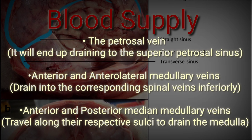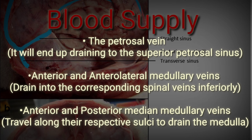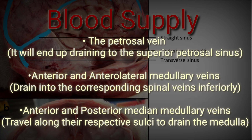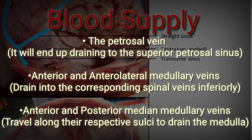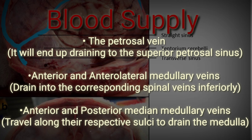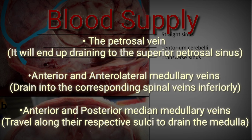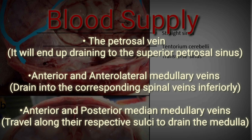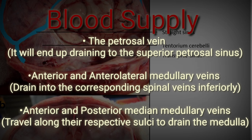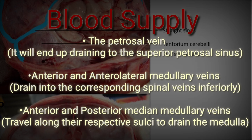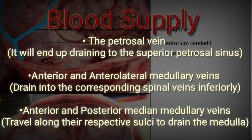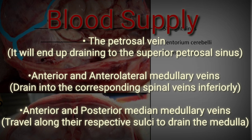Venous drainage: there are several main venous drainage routes for the medulla oblongata. The petrosal vein is one such vessel, and it drains to the superior petrosal sinus. Both the anterior and anterolateral medullary veins drain into the corresponding spinal veins inferiorly. There are also anterior and posterior median medullary veins that travel along their respective sulci to drain the medulla.